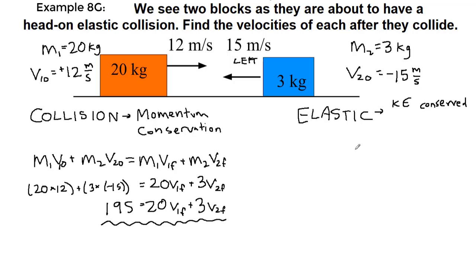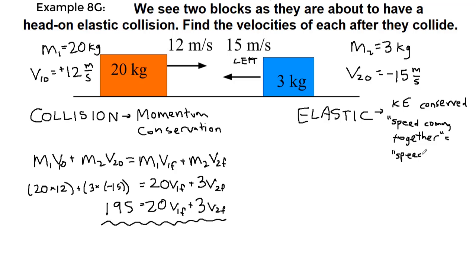There is a digital handout in the additional help area of Blackboard that is useful for seeing what that algebra looks like. But as discussed in the lecture video slides, for one dimension we have the understanding that the speed coming together equals the speed moving apart — just with opposite sign.